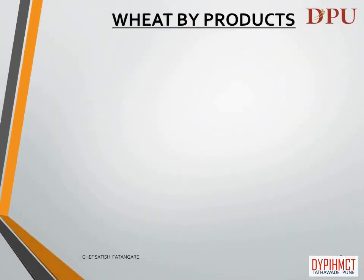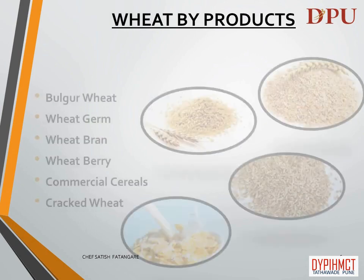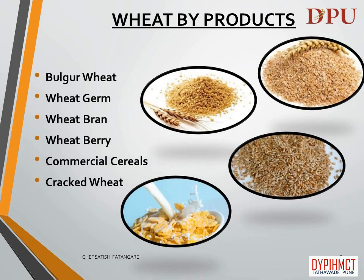In this slide we will learn about by-products of wheat. By-products of wheat are: Bulgur wheat, wheat germ, wheat bran, wheat berry, commercial cereals, and cracked wheat.